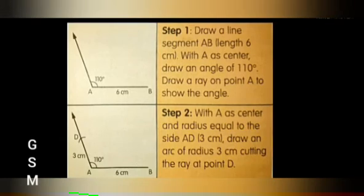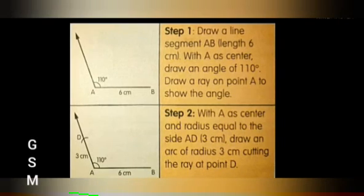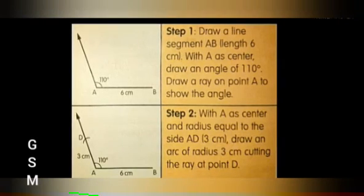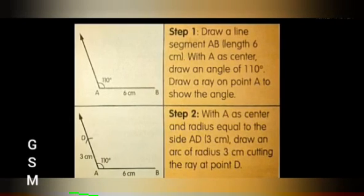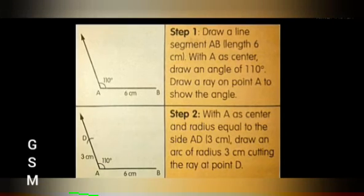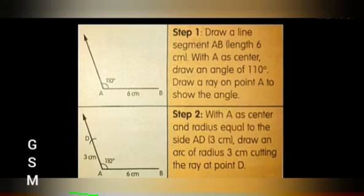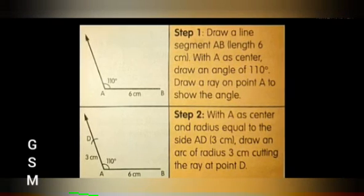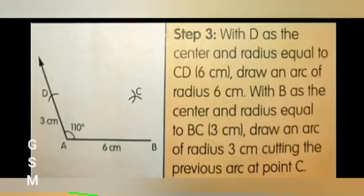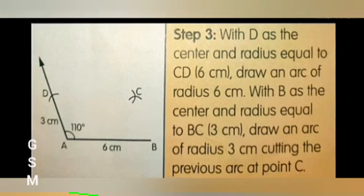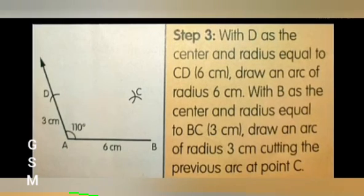Step 1: Draw a line segment AB of length 6 cm. With A as center, draw an angle of 110 degrees and draw a ray on point A to show the angle. Step 2: With A as center and radius equal to side AD, 3 cm, draw an arc cutting the ray at point D. Step 3: With D as center and radius equal to CD, 6 cm, draw an arc.